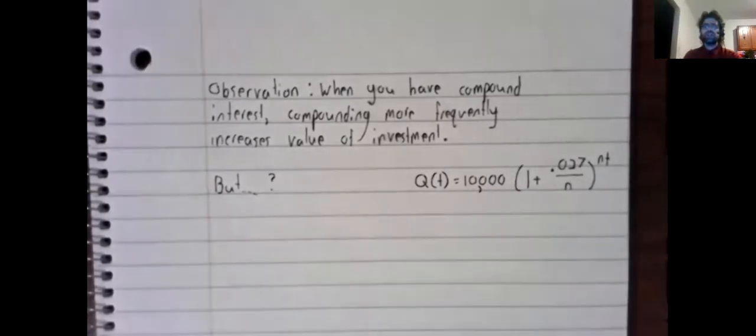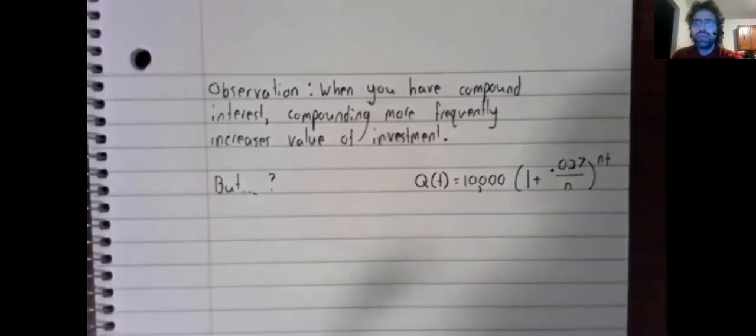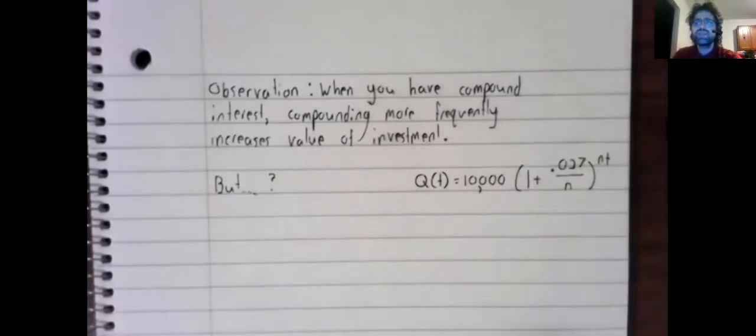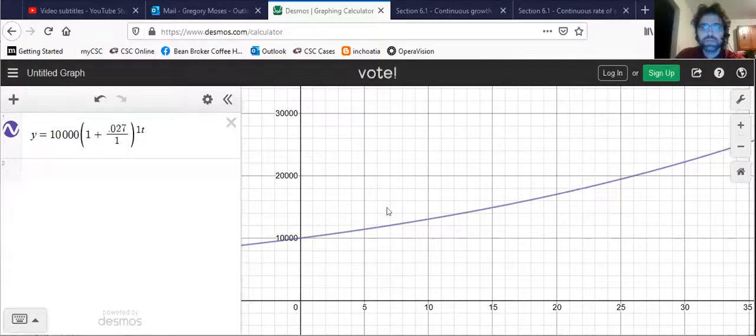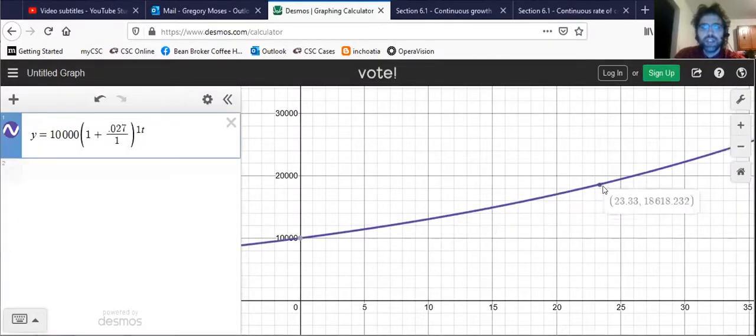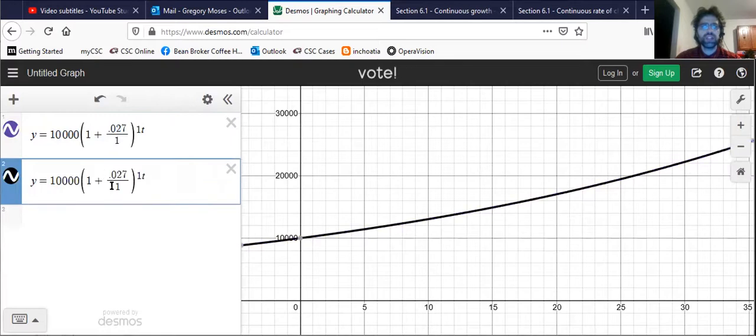And let's look at what happens if we compound once per year, if we compound twice per year, if we compound quarterly. Here's our investment if we compound once per year.